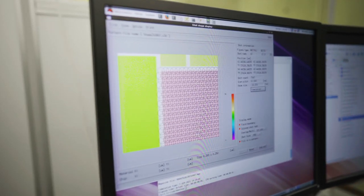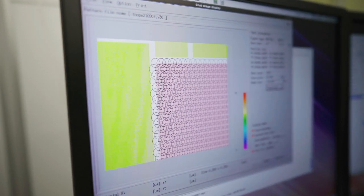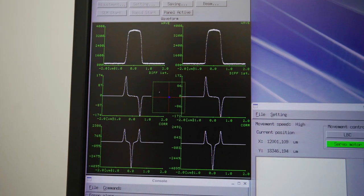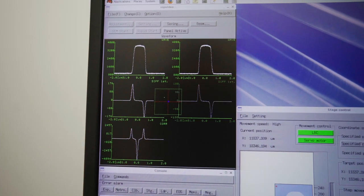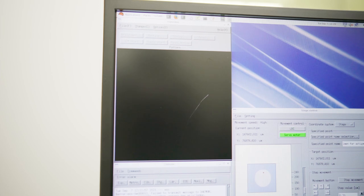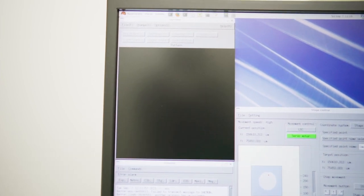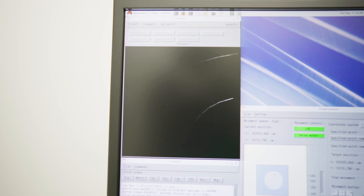Once everything is ready, the substrate is moved into the exposure chamber and a calibration routine is performed. This ensures that the shape and focus of the electron beam is optimized for best result. Once the calibration and beam optimization routine is completed, the pattern writing will commence.